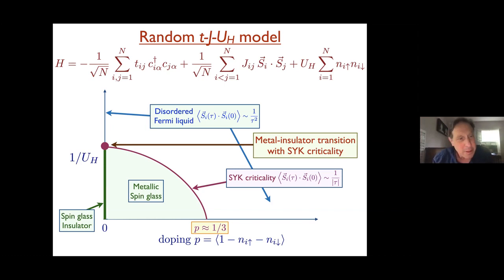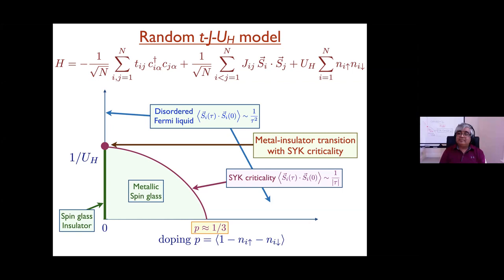Session chair question: Looking at the line with zero doping, the surprising thing is that spin-glass order and the insulating transition coincide. You might have naively thought the spin-glass order could persist into the metal past the critical point, since it's perfectly possible to have a metallic spin glass. The special thing here — having to do with fractionalization — is that they're occurring at the same point. Is that right?